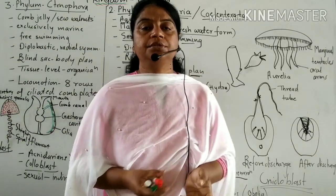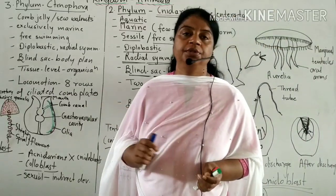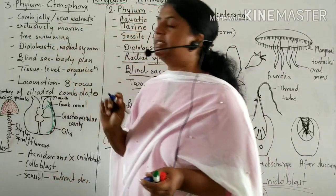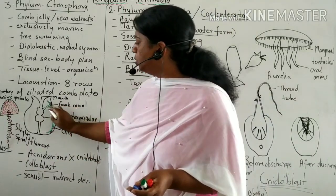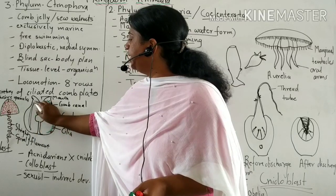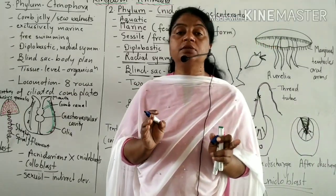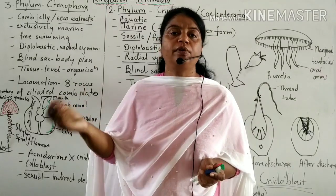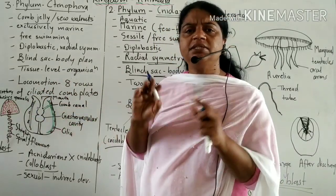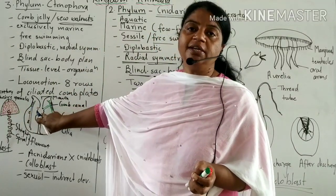The next, third phylum is Ctenophora — a minor phylum because very few examples exist on Earth. They are also called comb jellies or sea walnuts. They are called comb jellies because they show ciliated comb plates; they are jelly-like and transparent. They are called sea walnuts because their structure is like a walnut.